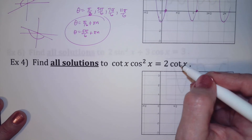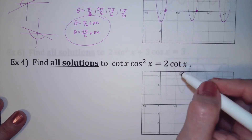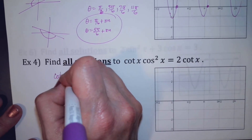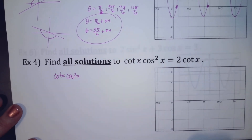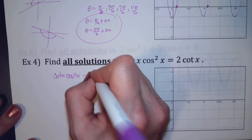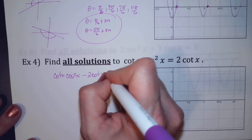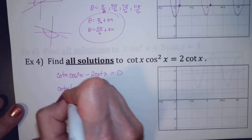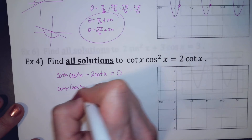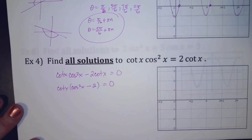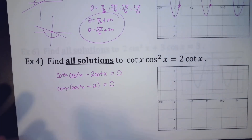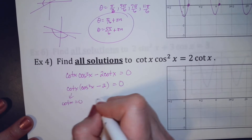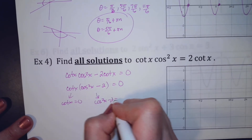I notice they have a cotangent in common, so I'm going to bring this over and factor. Cotangent times (cosine squared minus 2) — this is also why you did all that identity work, so you know to see these things. When you factor, you set each part equal to 0: cotangent equals 0, and cosine squared minus 2 equals 0.